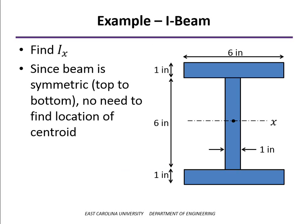If we put another 6 by 1 piece on the bottom of this to make an I-beam or a wide flange beam, and we want to find the moment of inertia, we can do it a little bit differently. Because we're symmetric from top to bottom, we know where the centroid is. The centroid is halfway between the top and the bottom.